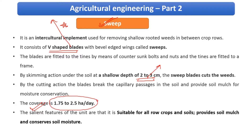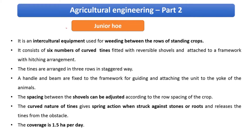The junior hoop is also used for weeding between the rows of standing crops. You need to know what each implement is used for, and the name should be registered in your mind. It has nearly six numbers of curved tines fitted with reversible shovels. Sweeps are V-shaped while shovels have blunt ends, as we've seen. The coverage of a junior hoop is 1.5 hectares per day.